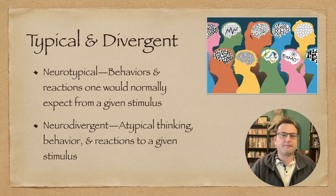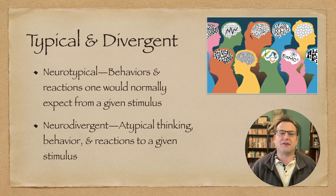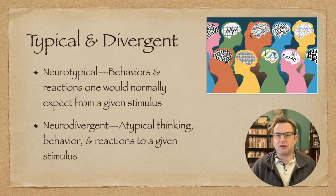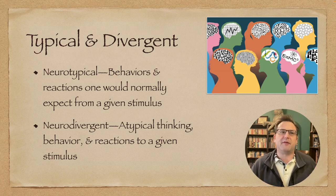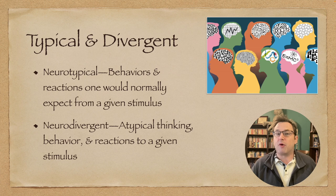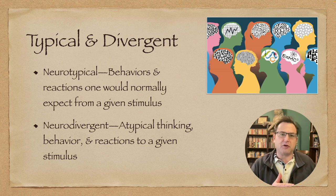The first terminology we'll discuss is neurotypical and neurodivergent. These are simply descriptors for an individual's response. Neurotypical refers to behavior or reactions one would normally expect from somebody given certain stimuli. Neurodivergent is an atypical response — thinking in a different manner than one would expect given a set of circumstances, or a different reaction or behavior. So: neurotypical is what you'd expect; neurodivergent is what you wouldn't.